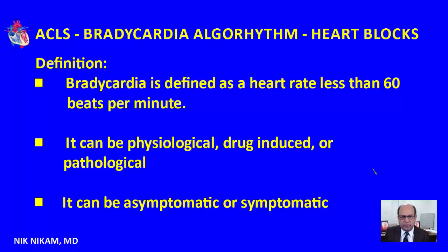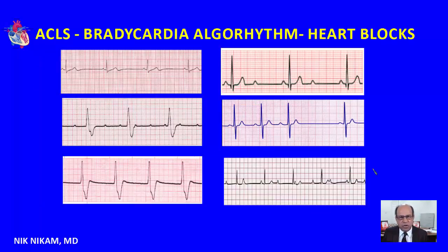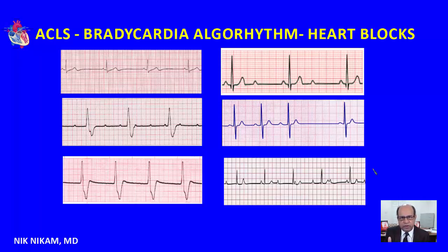If that is the case, then we proceed with the bradycardia algorithm. Let's look at some examples of slow heart rate — not every heart rate below 60 is alike. Many conditions can give rise to a slower heart rate, and most relate to a block at the AV junction. You are familiar with first degree AV block, where there is prolongation of the PR interval to greater than 200 milliseconds, which doesn't pose any major problem.